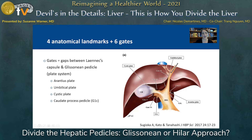Our colleagues described four anatomical landmarks and six gates. Seen here from an anterior view are the landmarks in rectangles and the gates numbered with arrows. The gates are those gaps between Laennec's capsule and the Glissonian pedicle or plate system. The landmarks to mark where we will find our gates are the Arantius plate or ligamentum venosum, the umbilical plate, the cystic plate, and the caudate process pedicle — G1C.